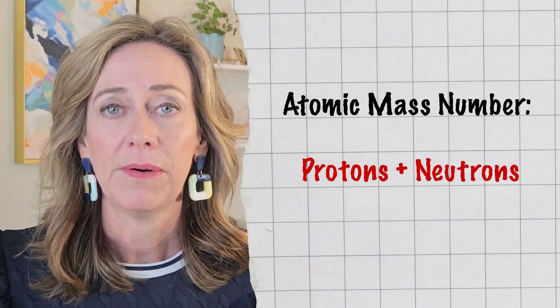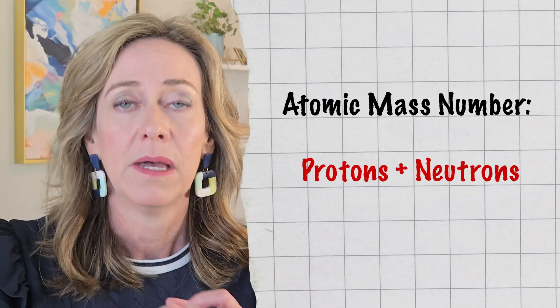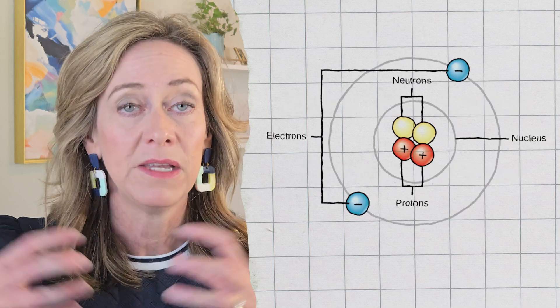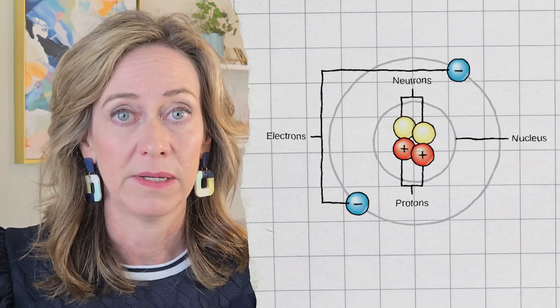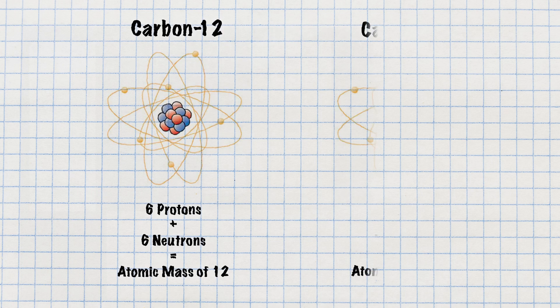The mass number of an atom means its protons plus its neutrons — the particles in the atom's nucleus. For example, carbon-12 has six protons, six neutrons, and a mass of 12. Carbon-13, on the other hand, has six protons, seven neutrons, and therefore has a mass number of 13.